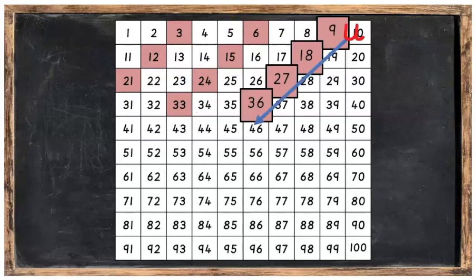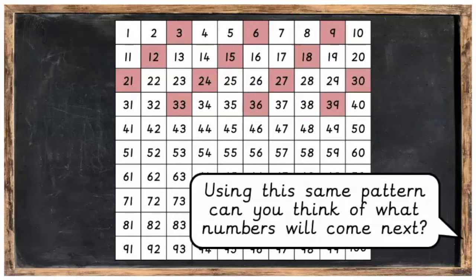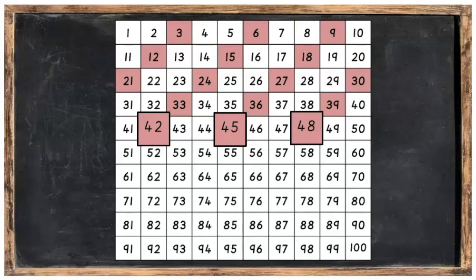Looking at these numbers, the same thing. The units are going down, and the tens are going up. Using this same pattern, can you think of what numbers will come next? Well done. Forty-two, forty-five, forty-eight.